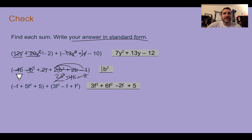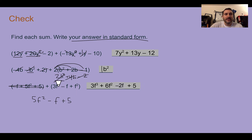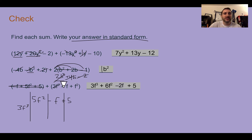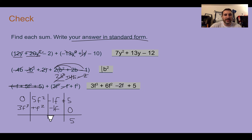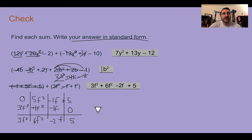For the last one, using the vertical method with placeholders: 5f squared minus f plus 5, and then 3f cubed minus f plus f squared. Lining up by degree: 3f cubed has its own column with a 0 placeholder above it; f squared terms are 5 plus 1 equals 6; f terms are negative 1 minus 1 equals negative 2f; and constants are 5 plus 0 equals 5. Final answer: 3f cubed plus 6f squared minus 2f plus 5.